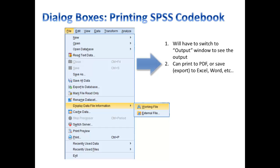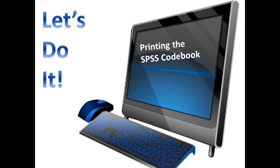You'll be able to print this to a PDF or an Adobe Acrobat file, or save it — they call it export — to Excel, Word, or some other format. So now let's do it. Let's print the SPSS codebook.